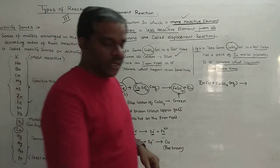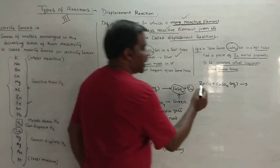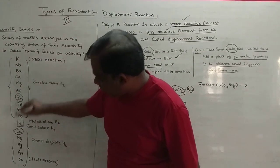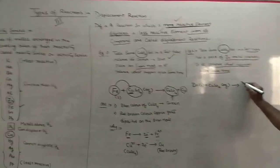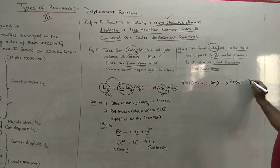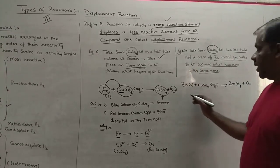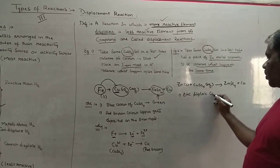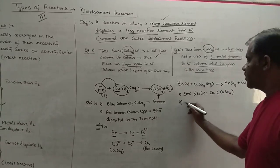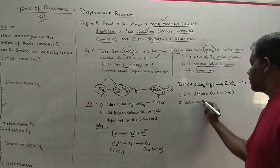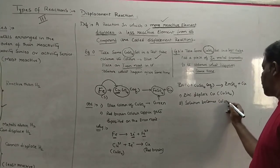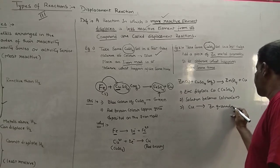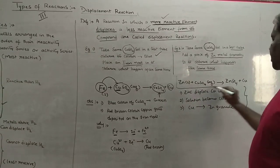Now let us consider the second example: Zn plus CuSO₄. If you look at the reactivity series, zinc is placed above copper. So obviously, zinc sulfate (ZnSO₄) is formed and copper gets deposited on the zinc. The observations are: one, zinc displaces copper from the copper sulfate solution; two, the solution becomes colorless; three, copper gets deposited on the zinc.